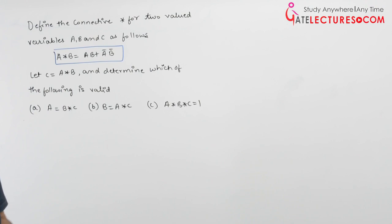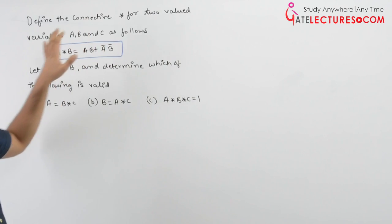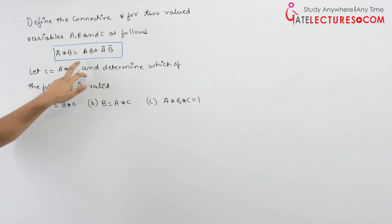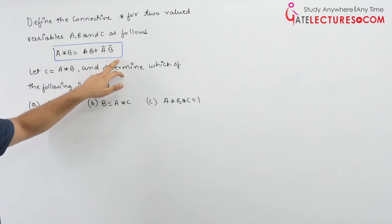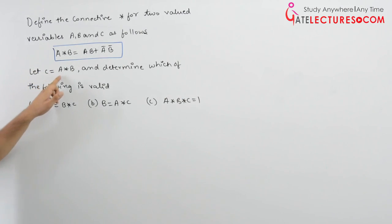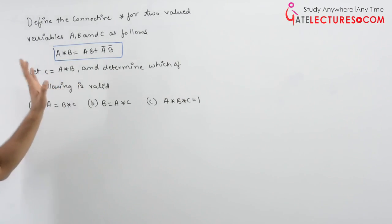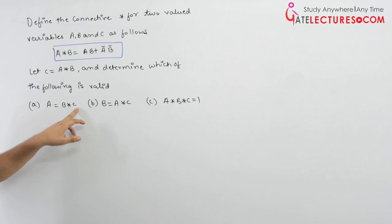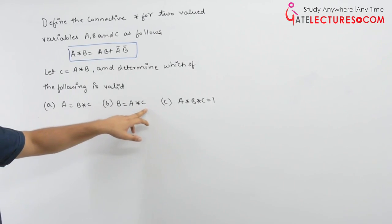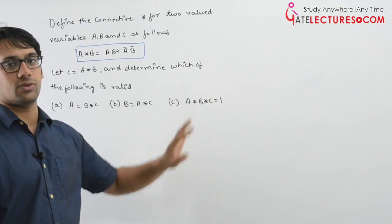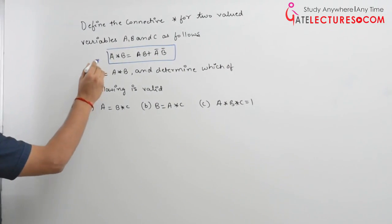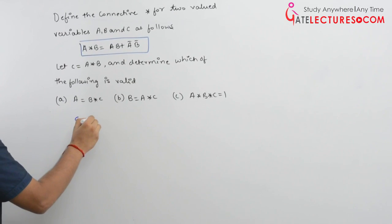Let us look at this question. They define the connective star for two-valued variables a, b, and c as follows: a★b = ab + a'b'. Let c = a★b. Now determine which of the following is valid: (1) a = b★c, (2) b = a★c, (3) a★b★c = 1. So first, we know c = a★b = ab + a'b'.